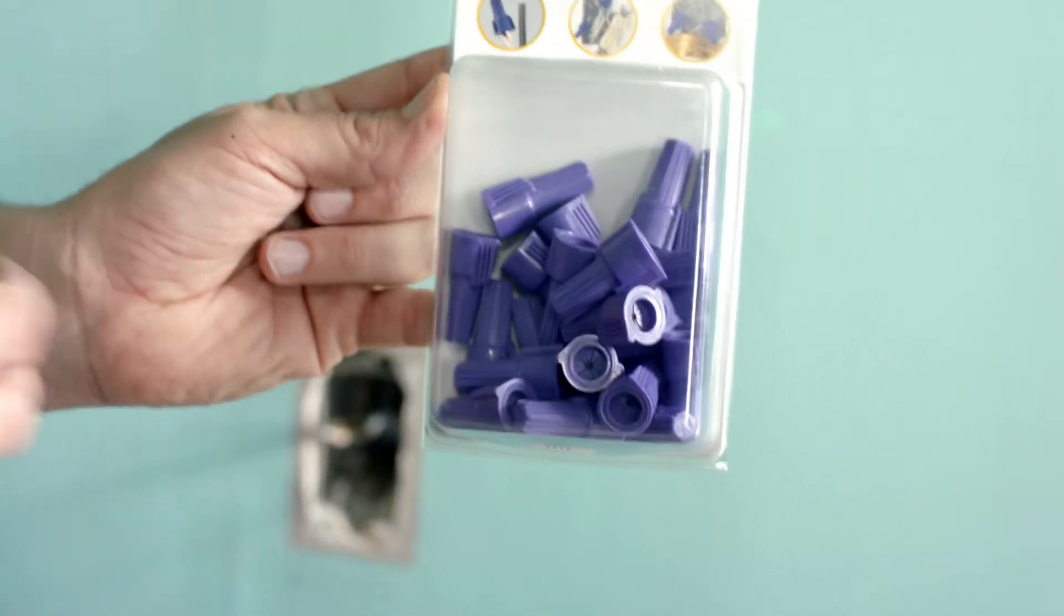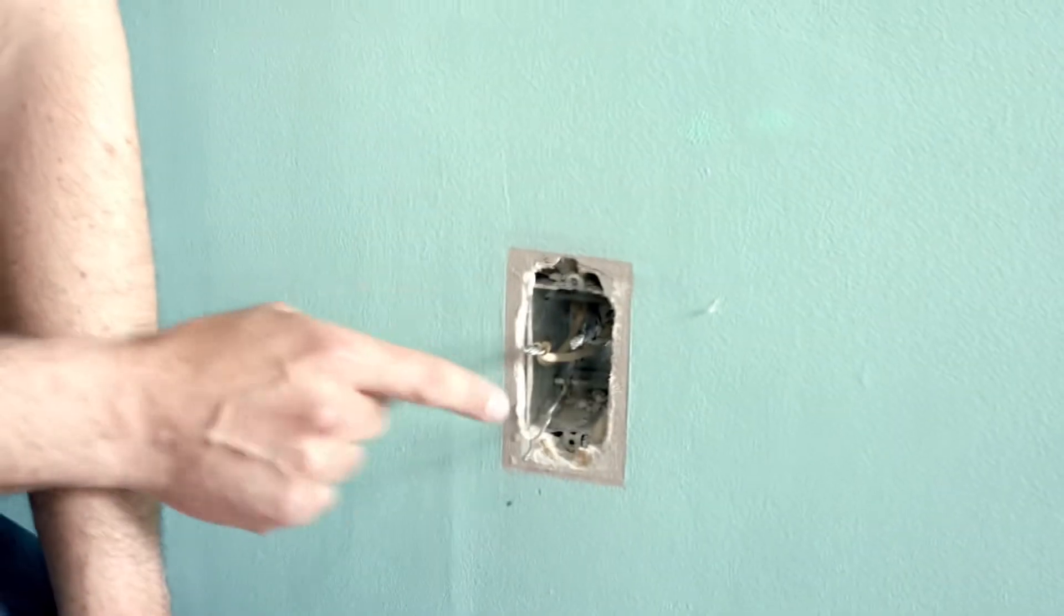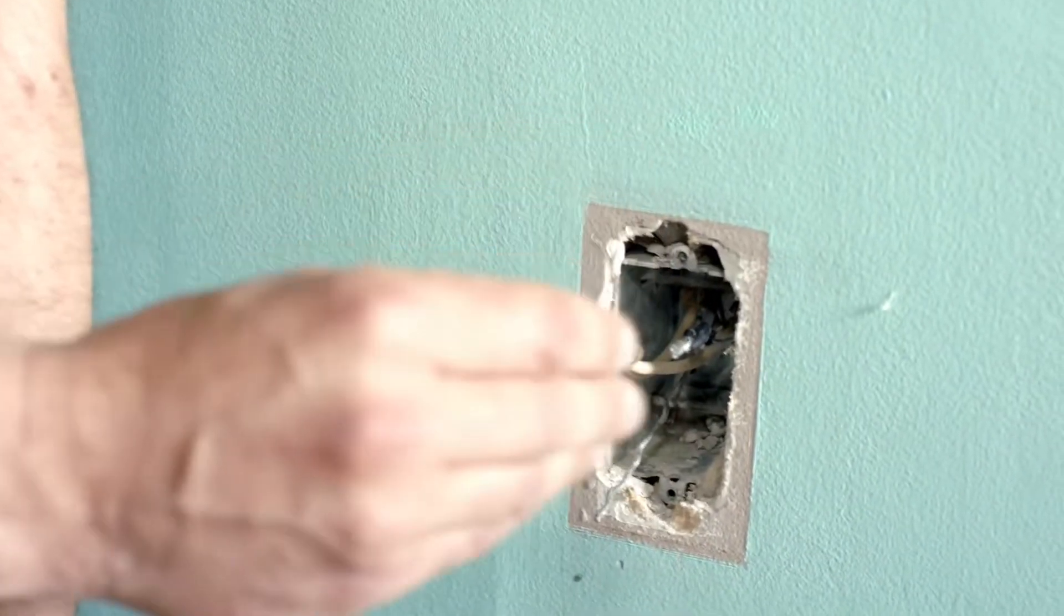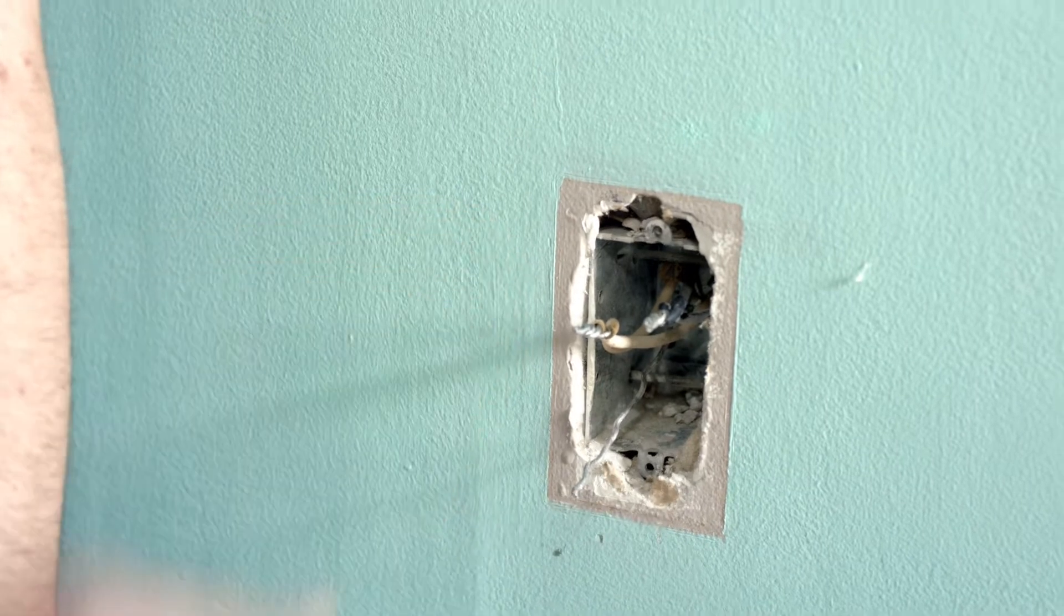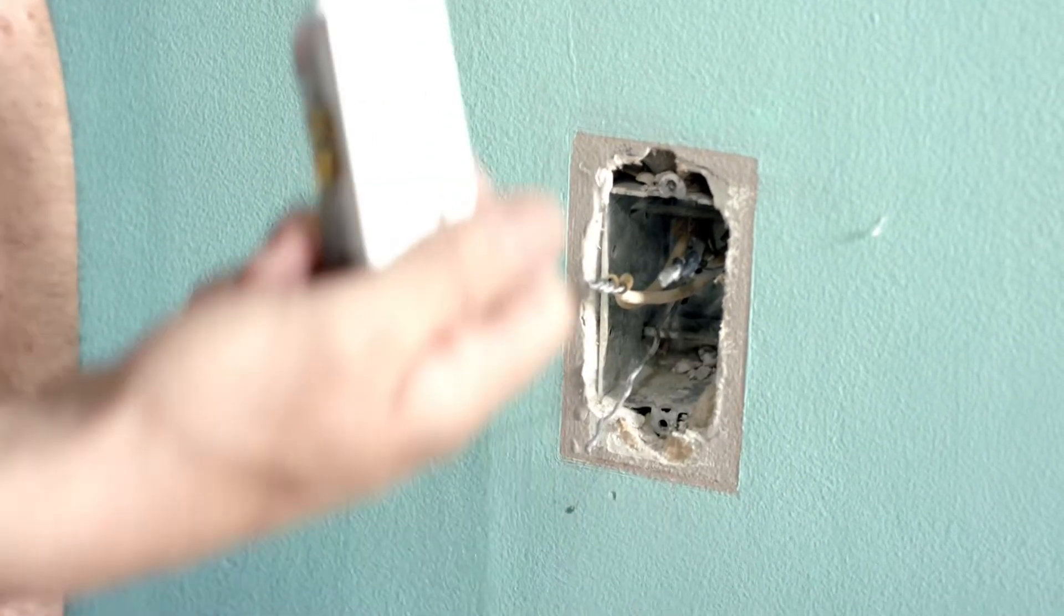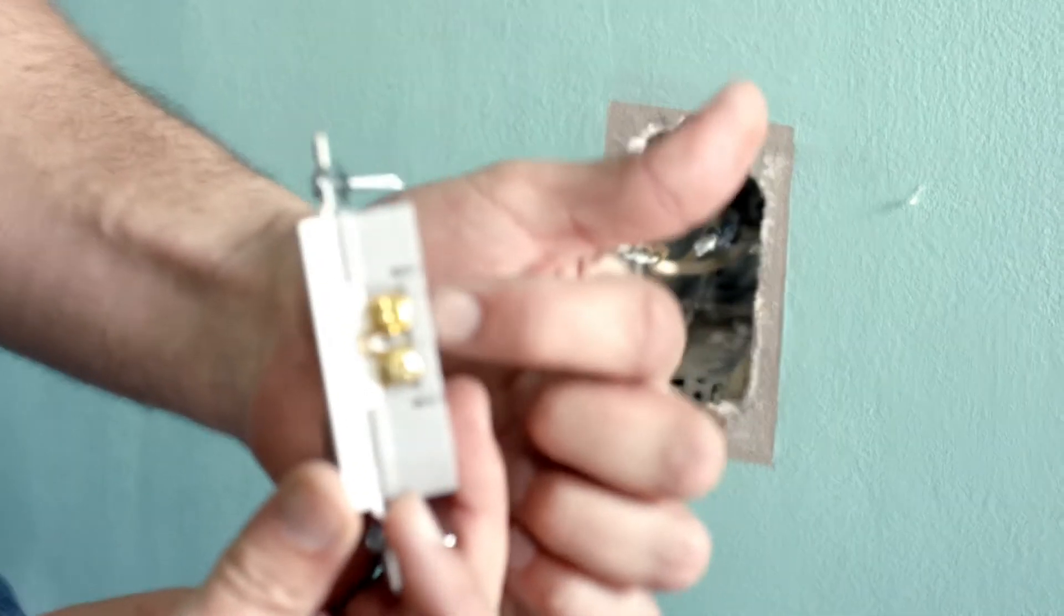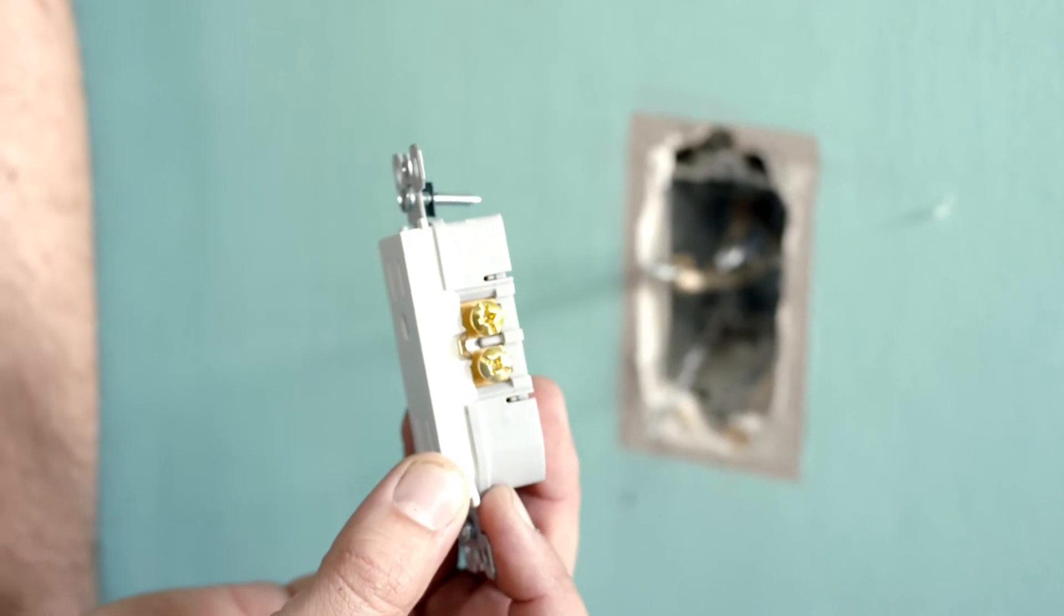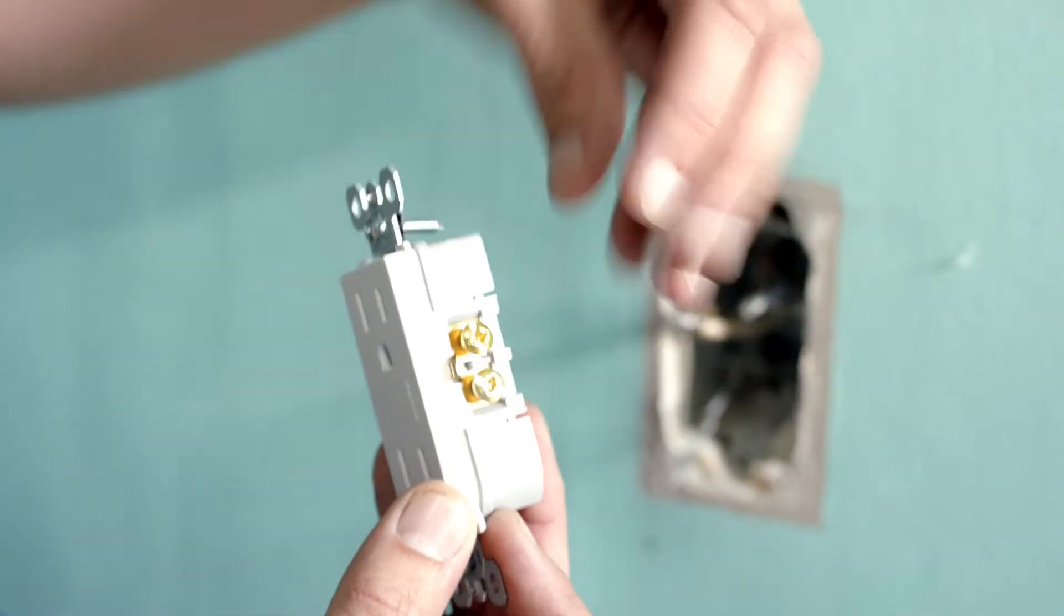The problem with aluminum is that over time it expands and contracts. As it expands and contracts, you're going to notice that it creates space in devices like plugs. Then what happens is as the space is created, heat starts building up, and heat and electricity are never good. You end up in a bad cycle that starts wearing on the aluminum insulation.